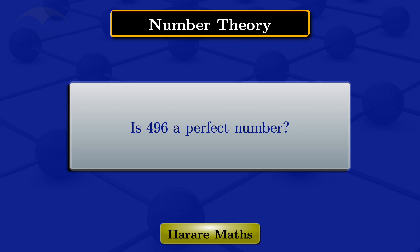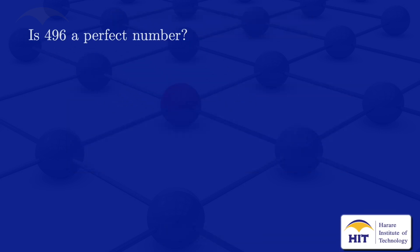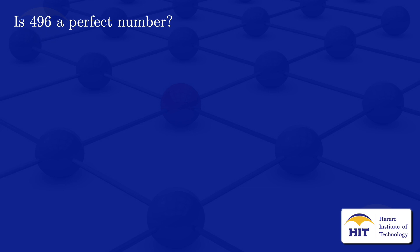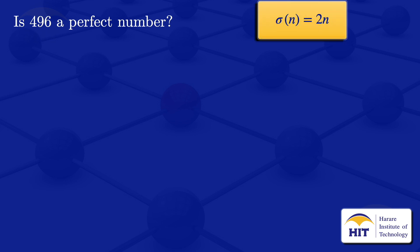In this video I'm going to check if 496 is a perfect number. We say that a number is perfect if sigma(n) equals 2n, where sigma(n) is the sum of divisors of n.